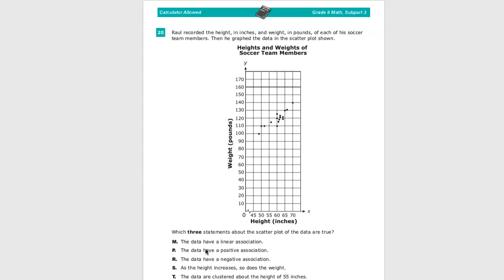The data have a negative association, which is to say when one goes up, the other goes down. So you'll see them start to drop over time. And then as the height increases, so does the weight. And the data are clustered about the height, 55 inches.